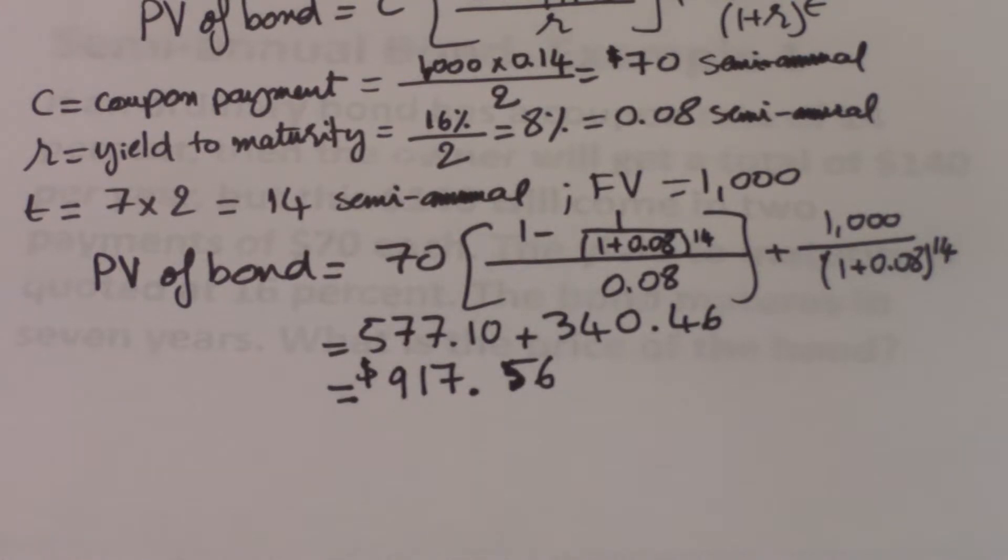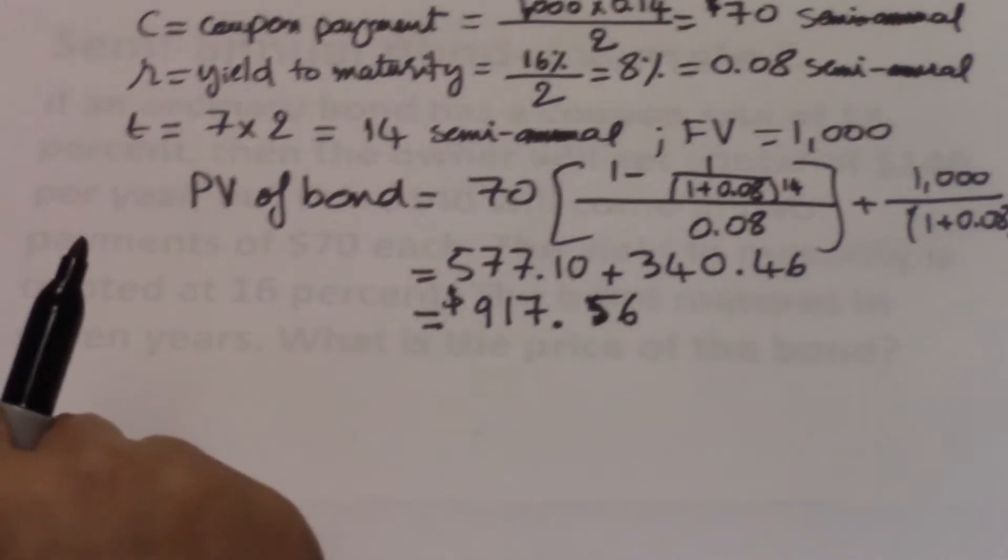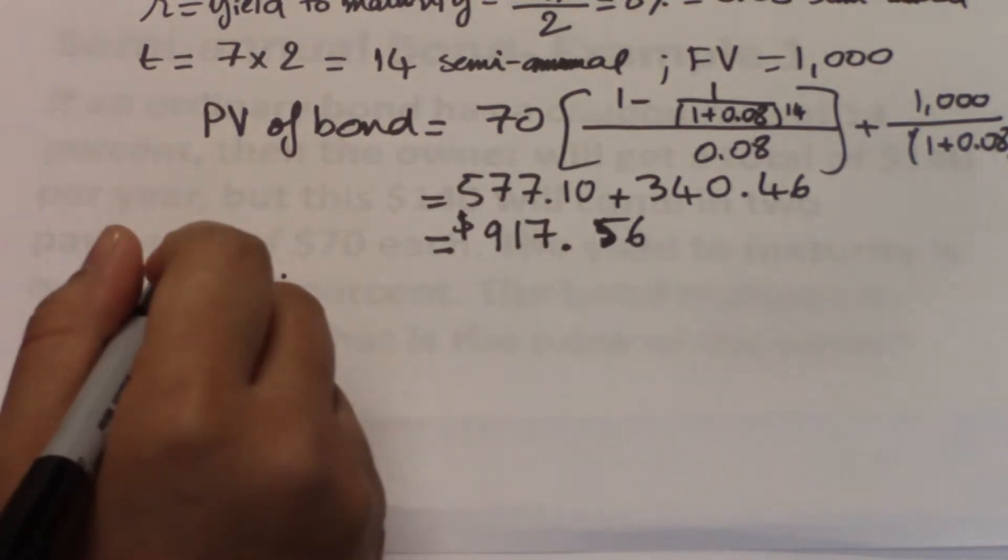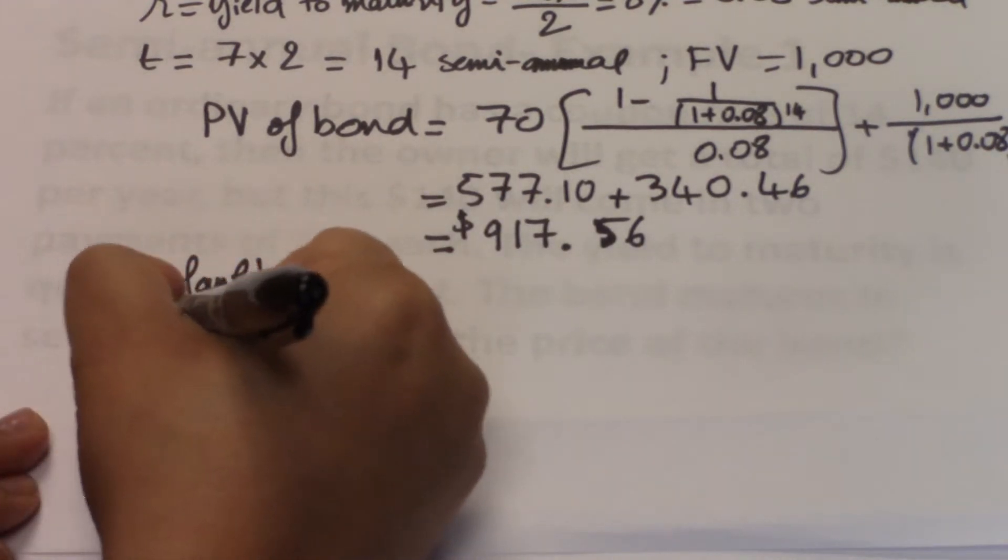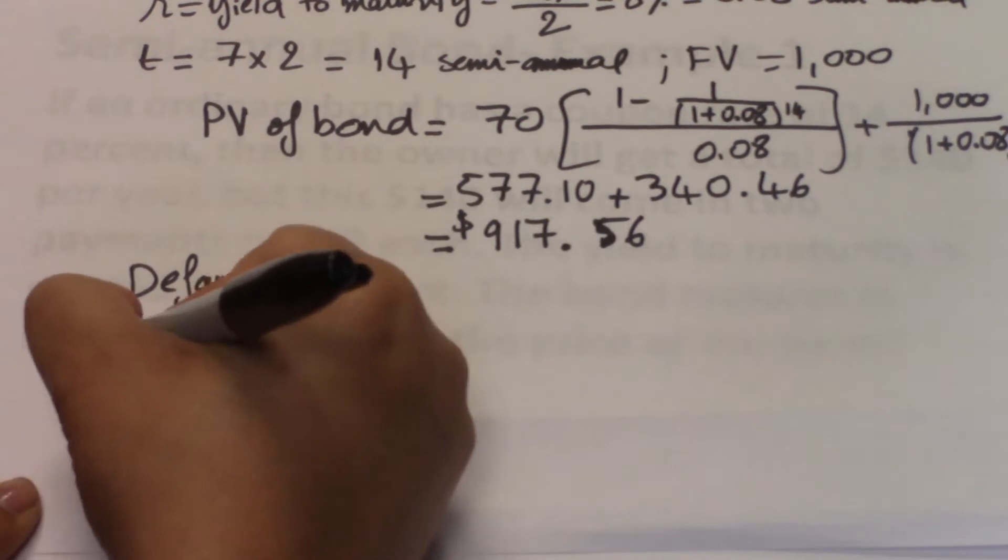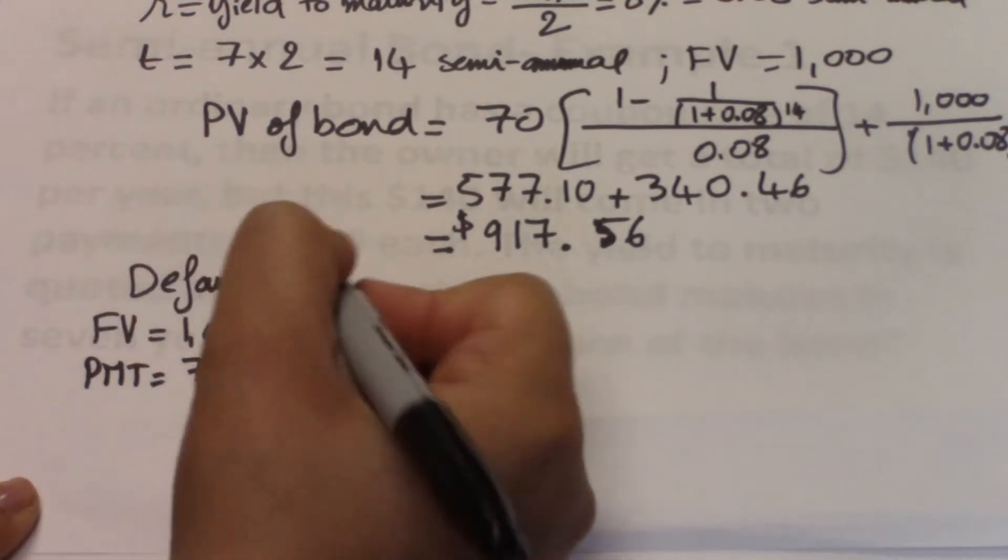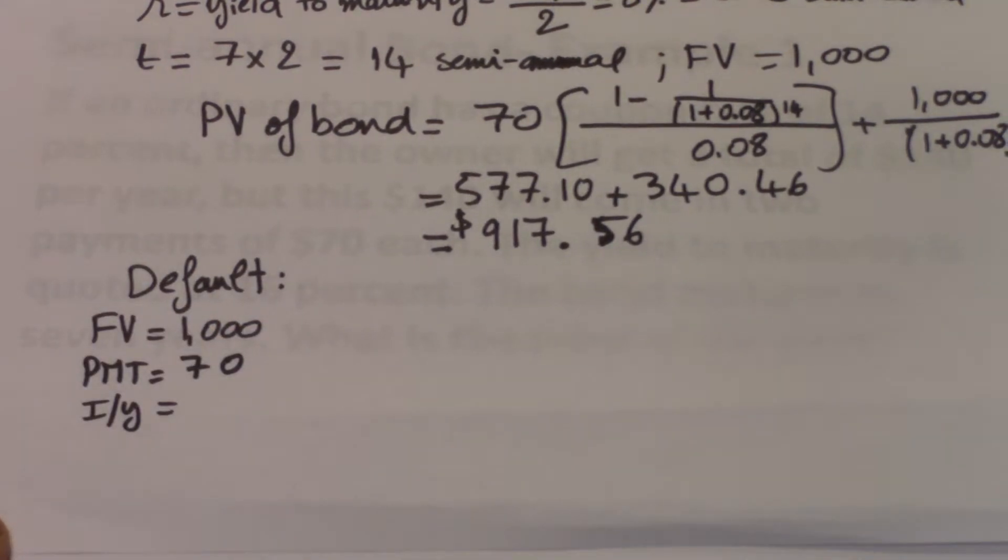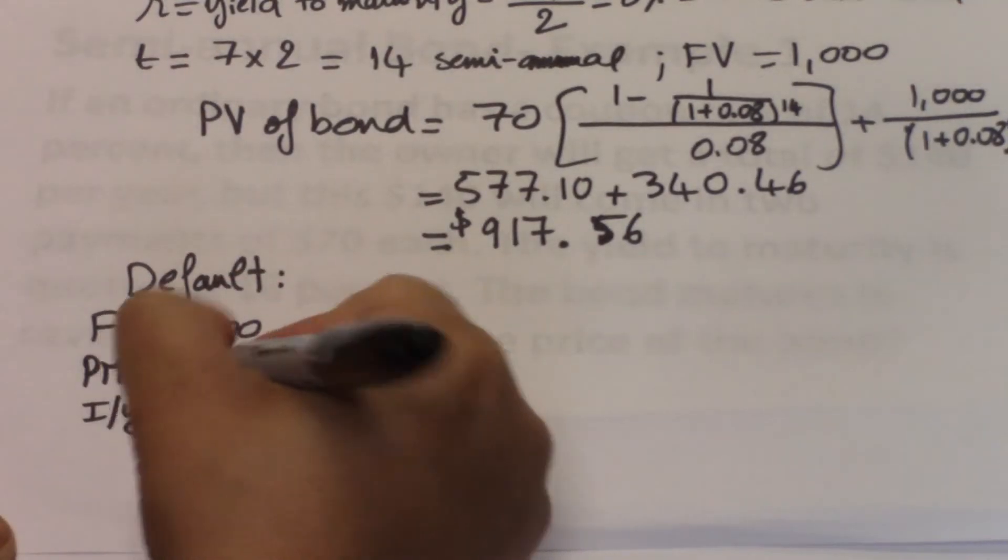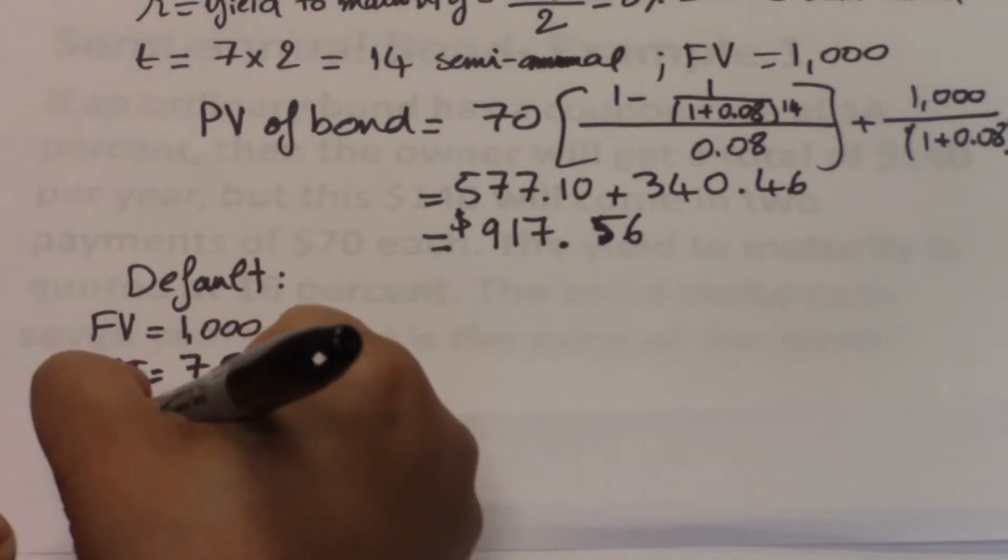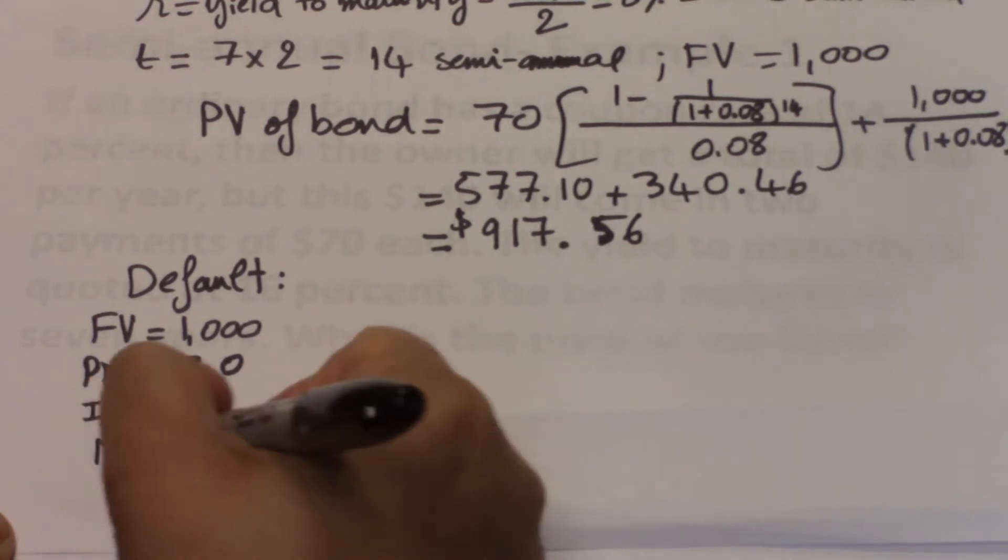You can use the default setting or you can set the calculator to semi-annual frequency. So first, if you use the default, this is what you need to input. So if you set to the default, the future value will be your 1,000. The payment will be your coupon payment that you get every semi-annual period. So it will be 70. The I over Y is your yield to maturity. And here you're going to input it as a semi-annual number. So it would be 8%. Remember, we always use the percentage in the financial calculator. And then N is 14. And you compute PV.